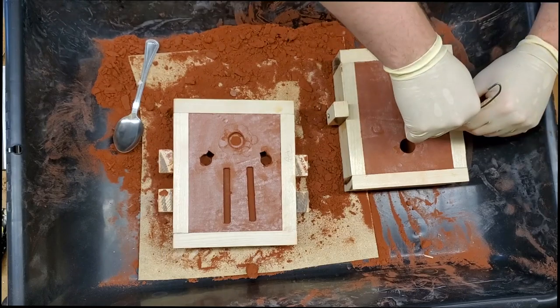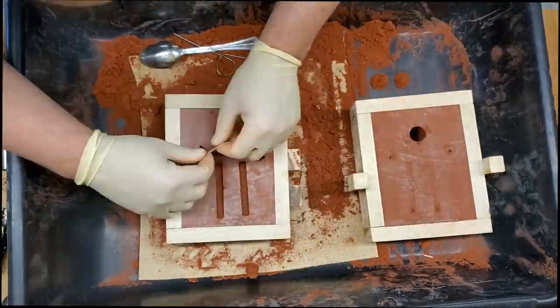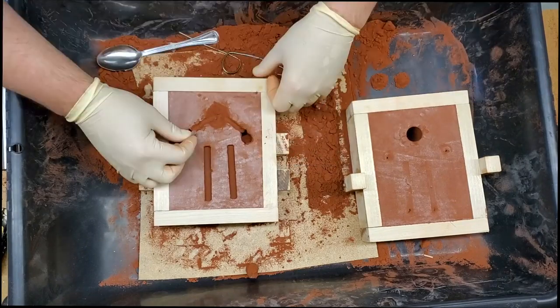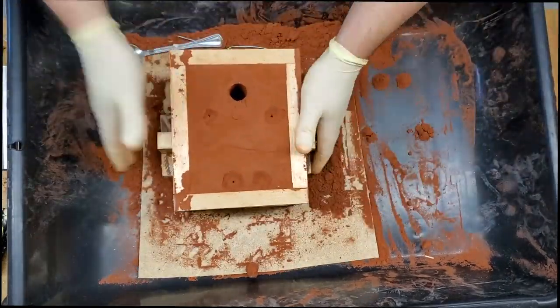Vent holes are added to the cope. To allow for the material to flow, the gates for the patterns are cut out. The box is assembled and it's casting time.